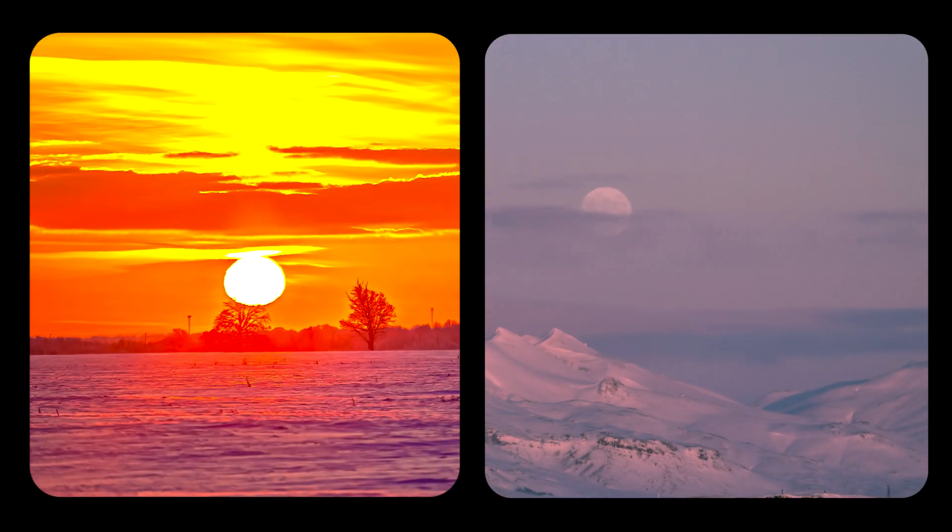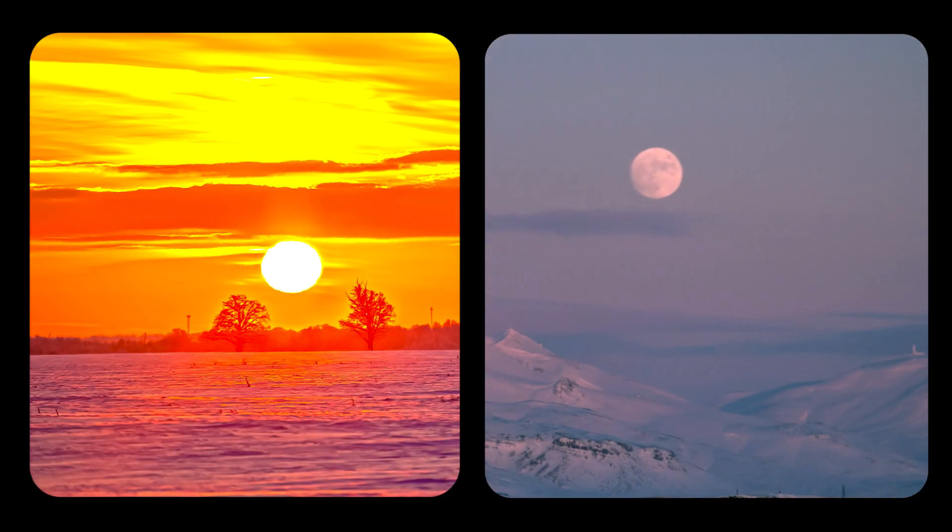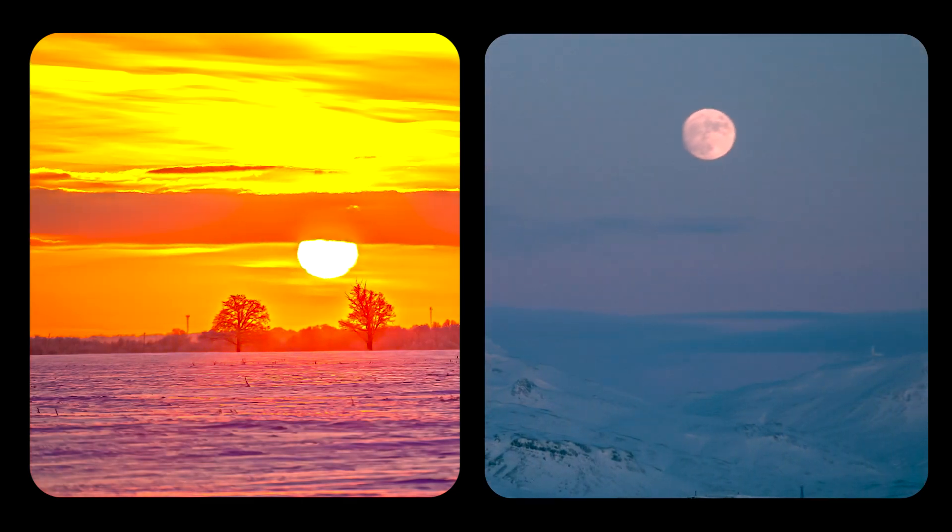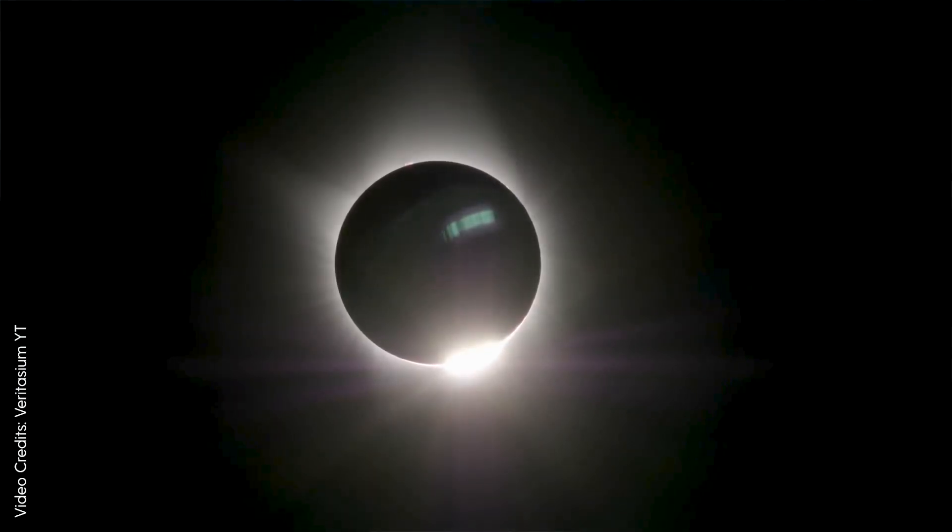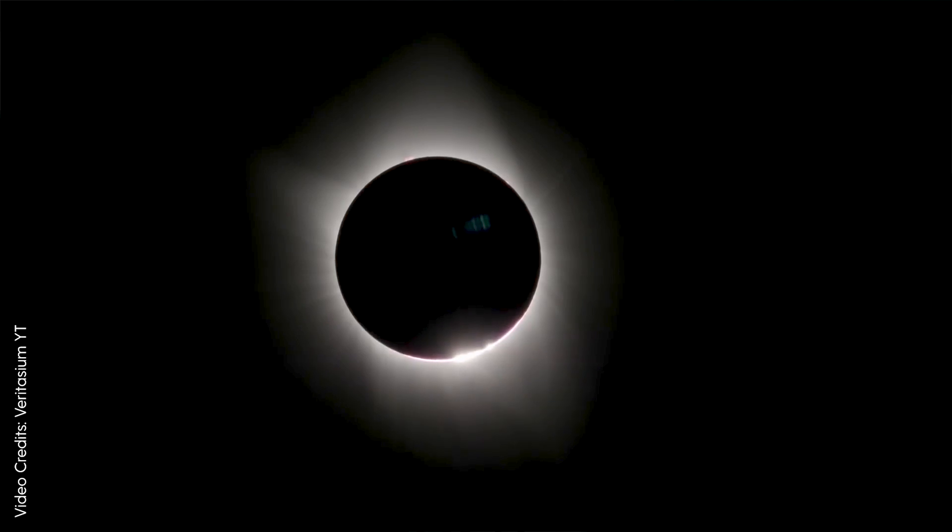When we look at the sun and the moon in the sky, they appear to be roughly the same size. This perception is why we sometimes witness perfect solar eclipses.